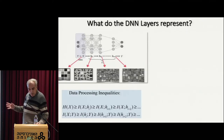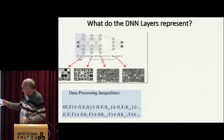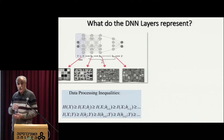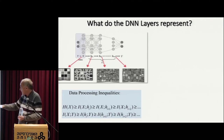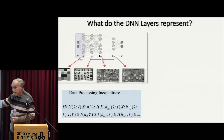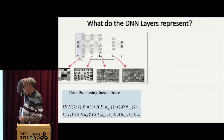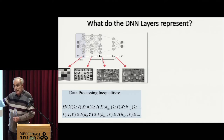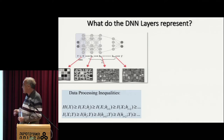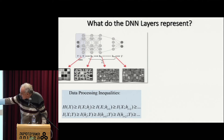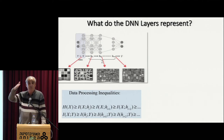If I actually apply this chain of inequalities — and believe me, we actually know how to estimate information even for very large systems, although it's very difficult — I have this chain of inequalities: a download inequality in terms of information about the input, and a list of inequalities when I talk about information about the label. This list of points I call the information path of the network.